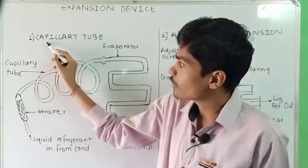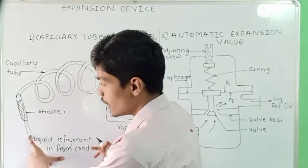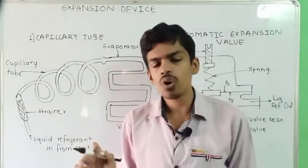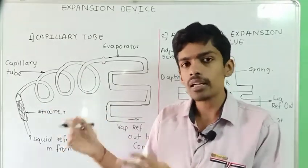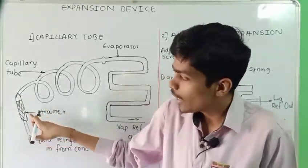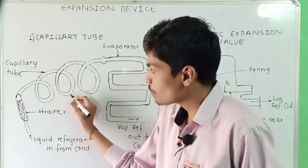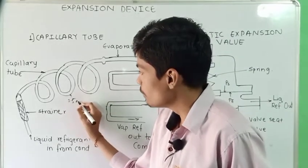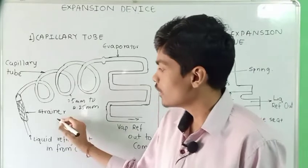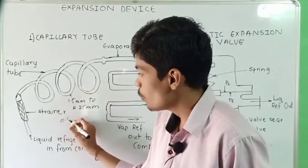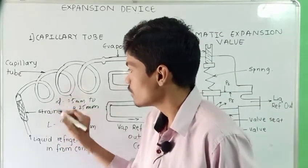You can see the diagram of the capillary tube. Liquid refrigerant from the condenser enters the strainer first. The strainer is used so that contaminants or unwanted material cannot go further — they are removed by the strainer. After the strainer, the liquid refrigerant enters the capillary tube. The inner diameter of the capillary tube is 0.5 mm to 2.25 mm, and the length varies from 0.5 meter to 5 meters.